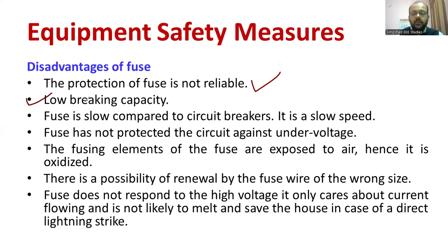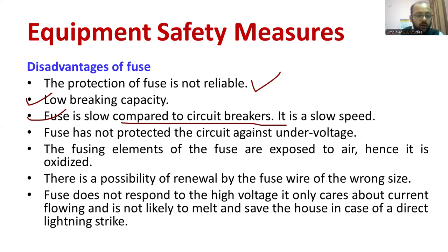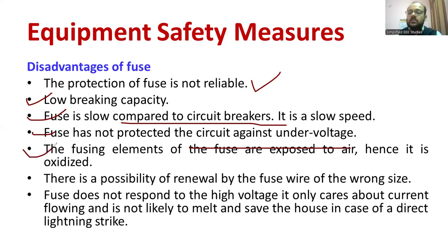There is also low breaking capacity — sometimes even though a fault is occurring, it keeps passing current. Fuse is slow compared to a circuit breaker, so we cannot rely on it every time. The fuse does not protect the circuit against undervoltage — that is another issue. The fusing element is exposed to air, so it gets oxidized and may not work further because of the coating formed on it.